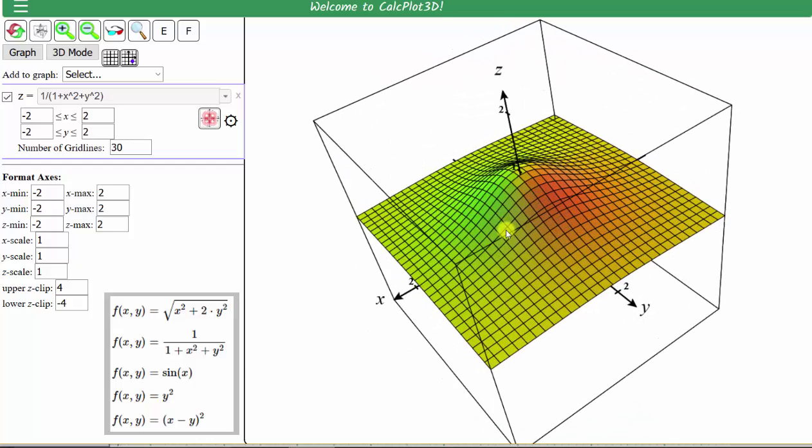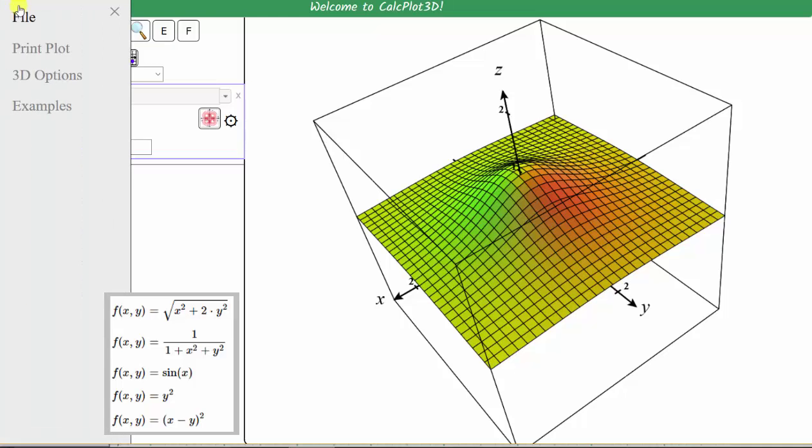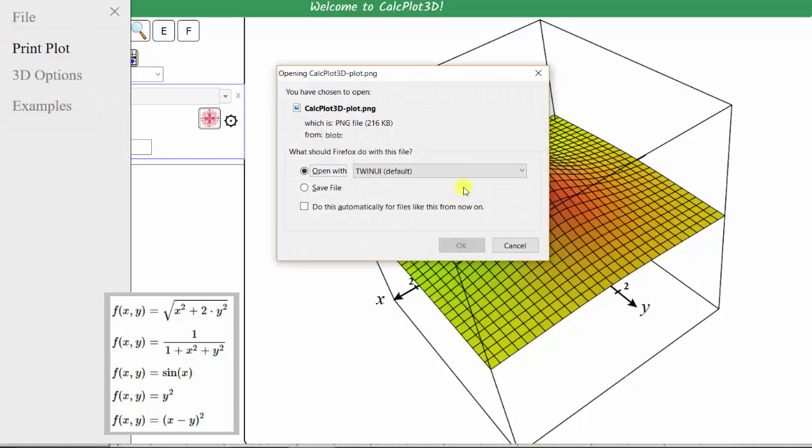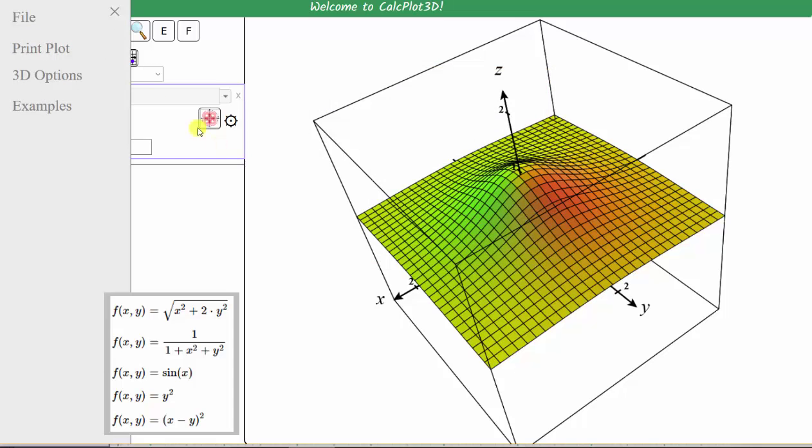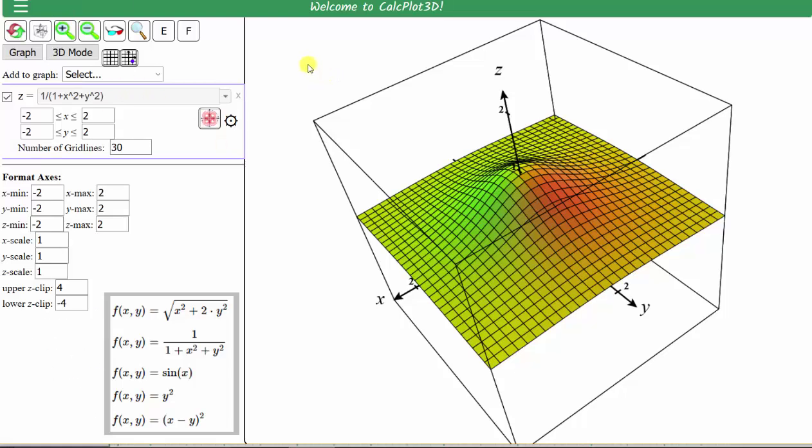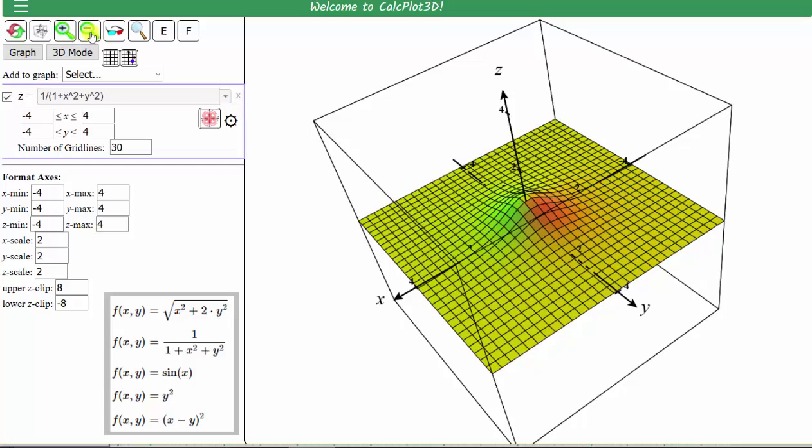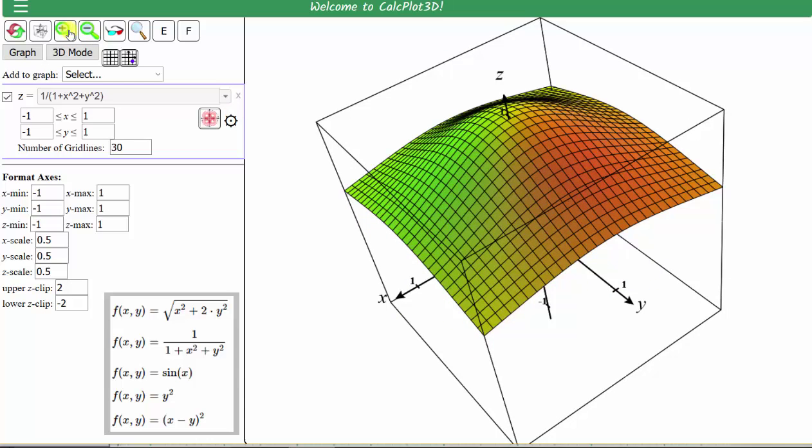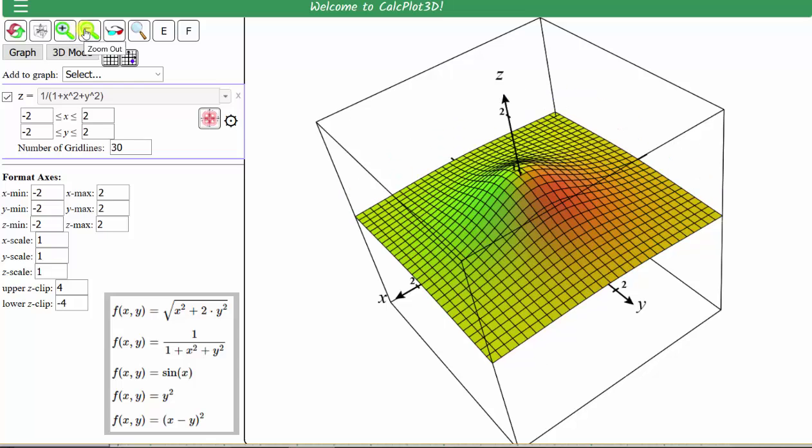If we want to save the graph as a PNG file, we click on these three horizontal bars, click file, and click save the plot as a PNG. Of course, we can also just snip the graph from the screen. Instead of zooming in and out using the magnifying glass, we can also adjust the axes manually by making changes here.